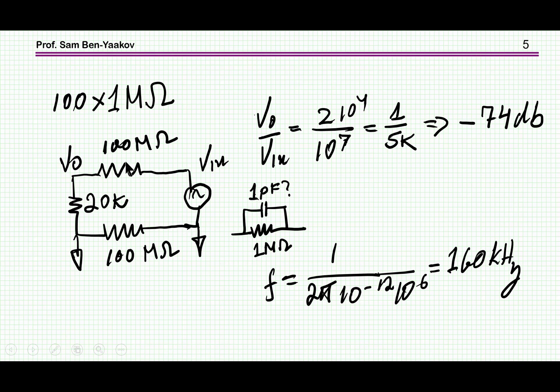So basically we have this circuit. We have 100 megaohm here, 100 megaohm here. These are two single ended branches. If we assume that here we have 100 megaohm and 20 kiloohm, then the attenuation is 1 to 5000, which is minus 74 dB. So this would be the attenuation here.